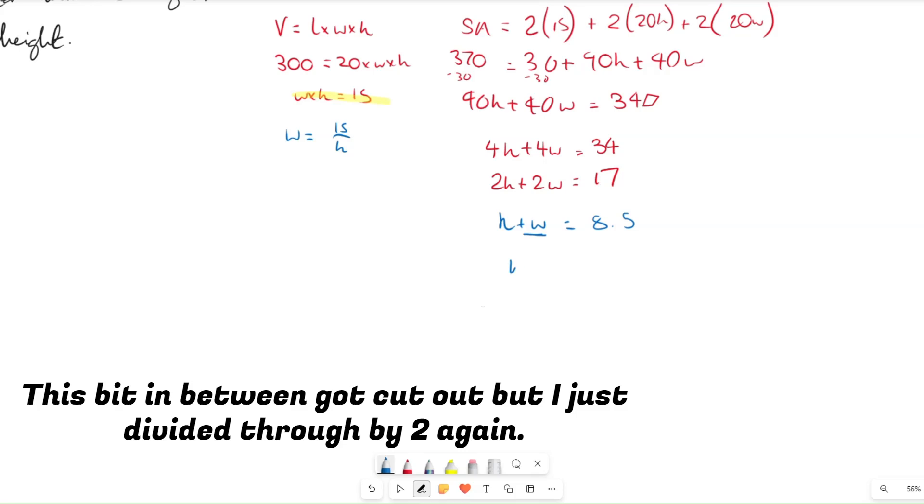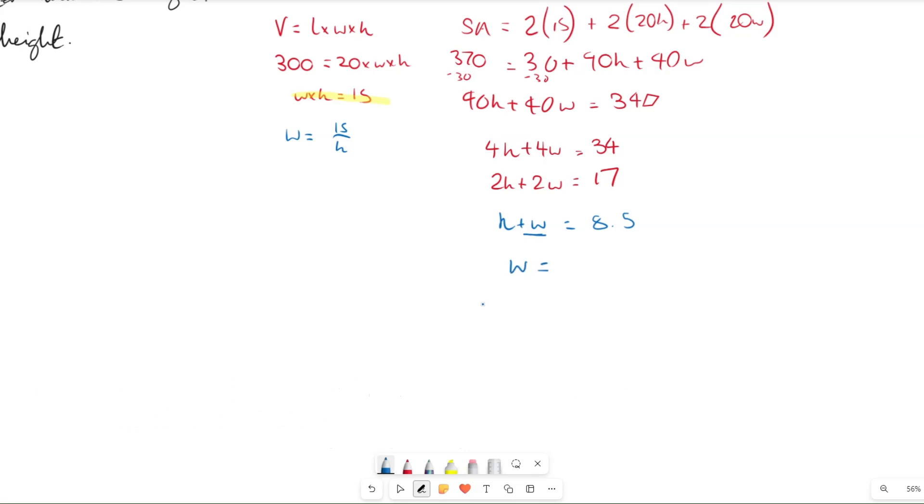Then what we're going to do, we're going to subtract h from both sides to get w on its own, so we have 8.5 minus h, and then if we substitute it into this equation, we get h multiplied by 8.5 minus h, which equals 15, and then we expand the bracket, so 8.5h minus h squared equals 15.